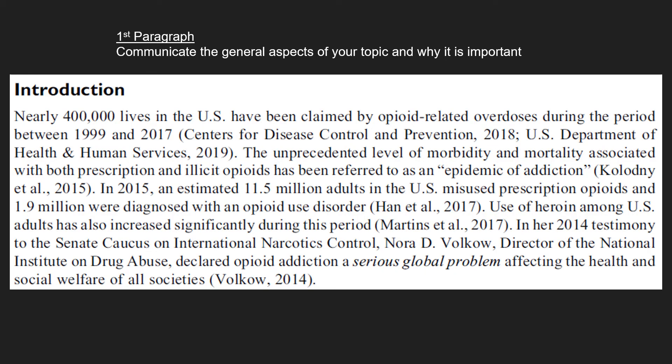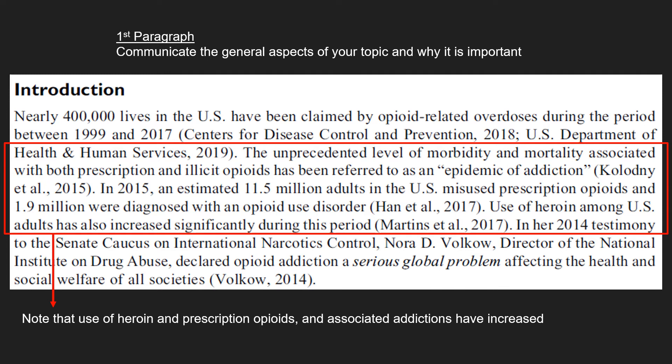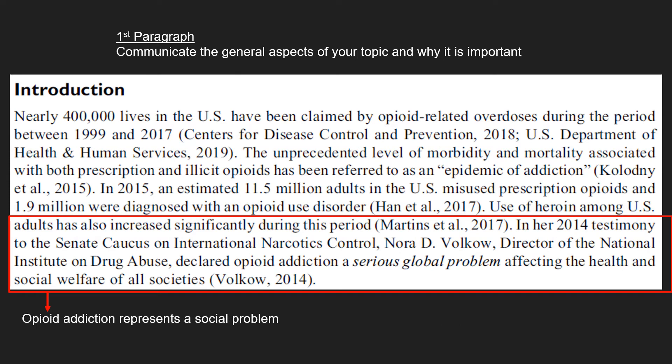In the first paragraph of this paper on how addiction is represented by people responding to media coverage of the opioid epidemic, we first highlight the large number of deaths that have occurred due to drug overdose — information reported by the Centers for Disease Control and Prevention. We also note that heroin use and opioids and resulting addictions have increased over the past several years. Finally, we make a case for why opioid addiction represents a social problem that's worthy of study.